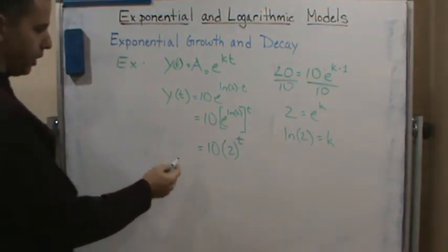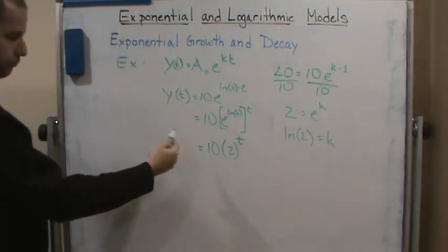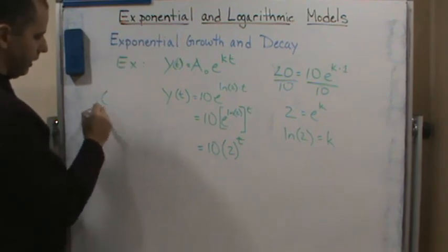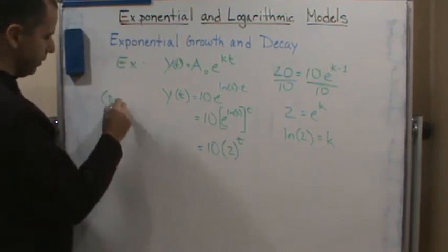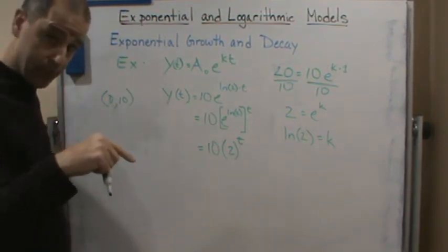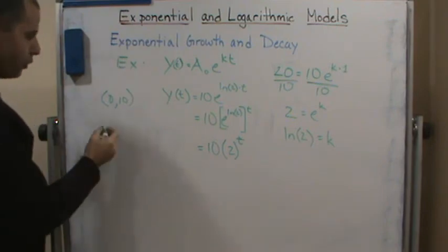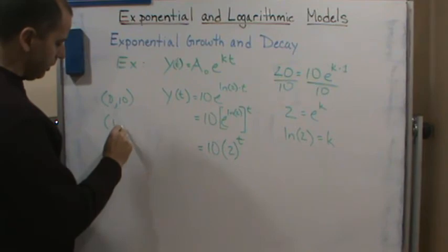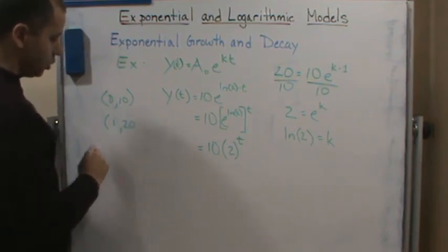Because I know based on the characteristics the y-intercept is going to be 0 comma 10, and I also know from previous classes the other points that this is going to go through is it's going to go through 1, 20.